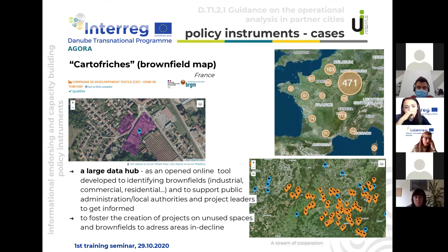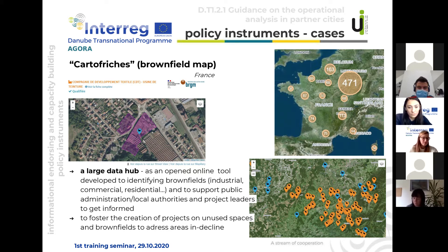People can then vote online for projects, providing input to local authorities on which projects will be financed. Another tool is Cartofriche, a brownfield mapping platform. It is a large data hub developed as an online tool to identify brownfields and support public administrations, local authorities, and project leaders to get informed. This tool can foster the creation of projects on underused spaces and brownfields to address areas in decline.